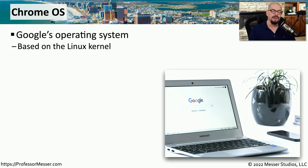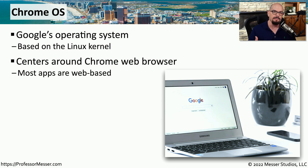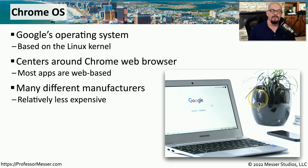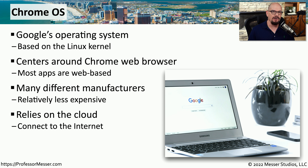Another operating system you might run into is one made by Google — this is the Chrome OS, and it's based on the Linux kernel to provide capabilities on a very low-end platform. This operating system is based around the functionality of the Chrome browser, and many applications you would use are browser-based and operate in Chrome. Chrome OS tends to run on systems with a minimum of hardware requirements, and since the device has hardware limitations, a lot of the applications will run in the cloud — so you'll often see Chrome OS very closely tied to cloud-based applications.